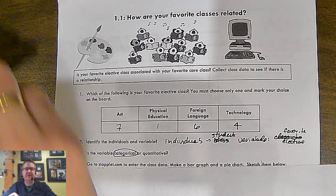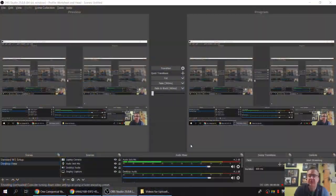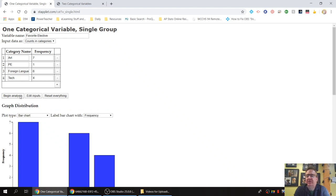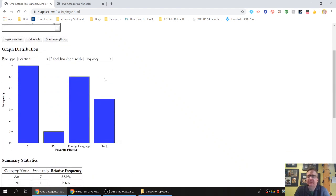When you go there, you have a whole bunch of different things. So I picked categorical variable one, and I typed everything in here for the sake of time. Notice I have my variable name. I'm putting things as counts, and you'll see why here in a second. And then I'm going to say begin analysis. So there's my bar chart. Look how pretty that is.